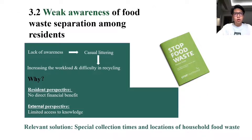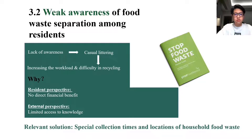The second important point is weak awareness. In many Chinese cities, residents have weak awareness of waste separation, leading to cultural littering. This is mainly due to lack of waste knowledge: waste separation brings no direct economic benefit to individuals, and they often lack time to scientifically distinguish types of waste. Externally, the government's policies are not effectively publicized. This makes it difficult for residents to develop household waste separation awareness. The government should set up special food waste collection times and locations and employ mandatory measures to promote public awareness of rubbish separation.